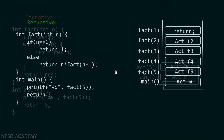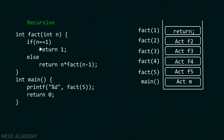On the other hand, the recursive version requires a total of six activation records to be stored inside the stack, because we first call the main function, then fact of five, then fact of four, fact of three, fact of two, fact of one, and then we return back. You can clearly observe that recursive programs require more stack space in comparison to iterative programs. So whenever you are short on memory, you should prefer iterative programs over recursive programs.